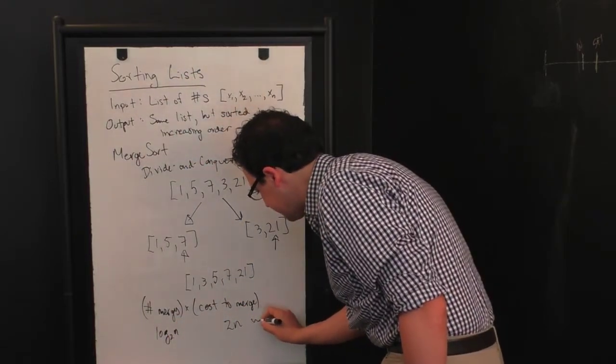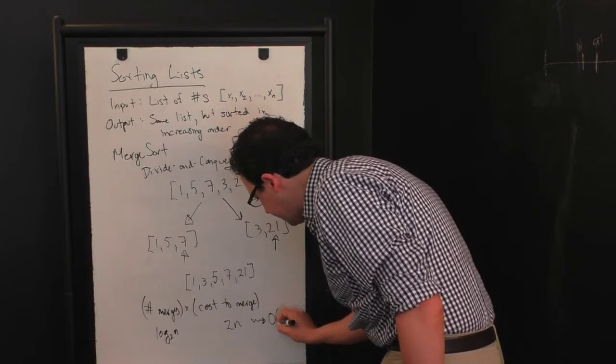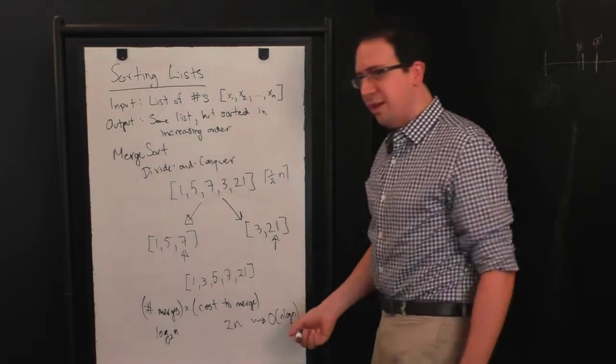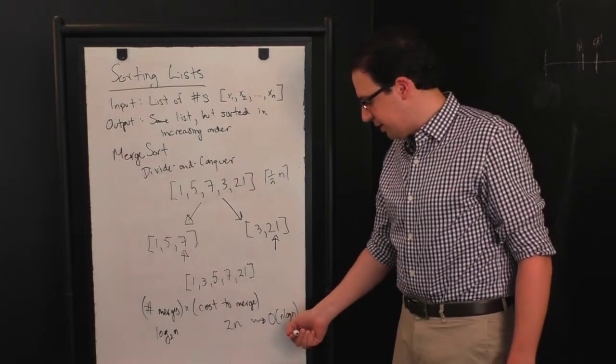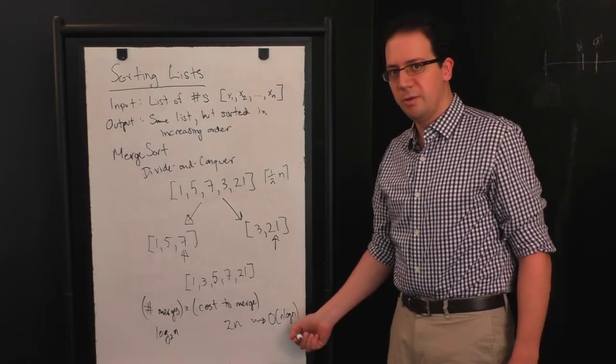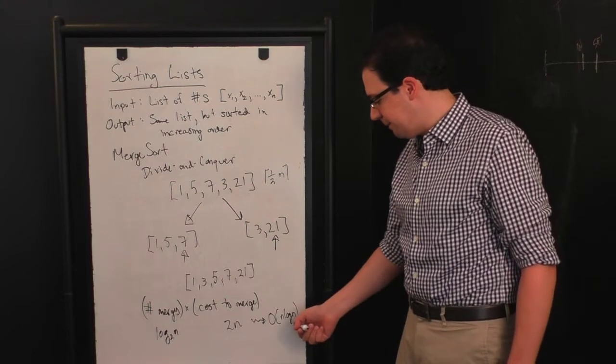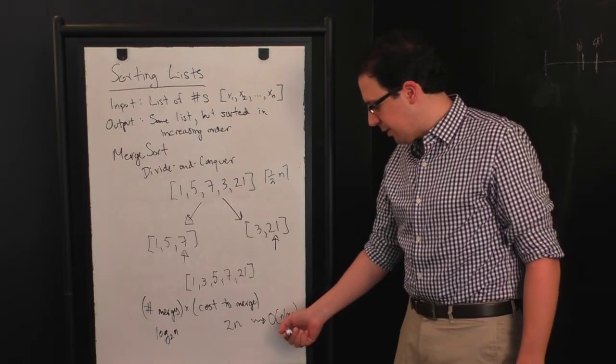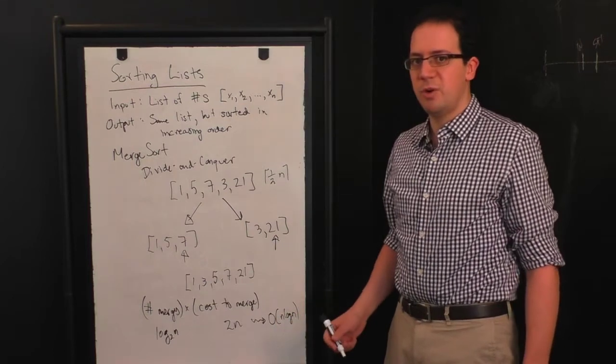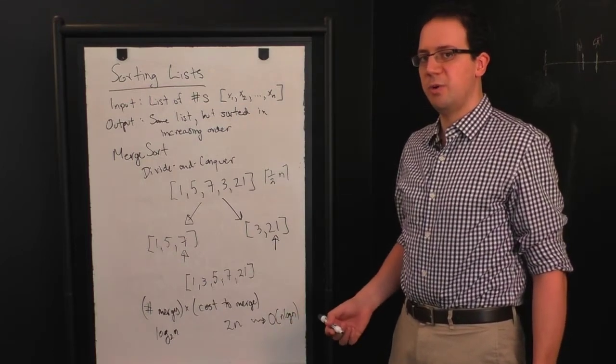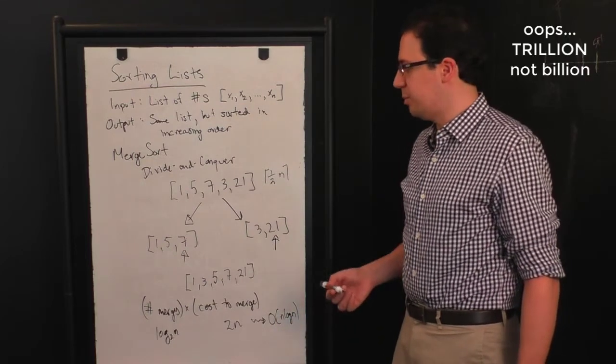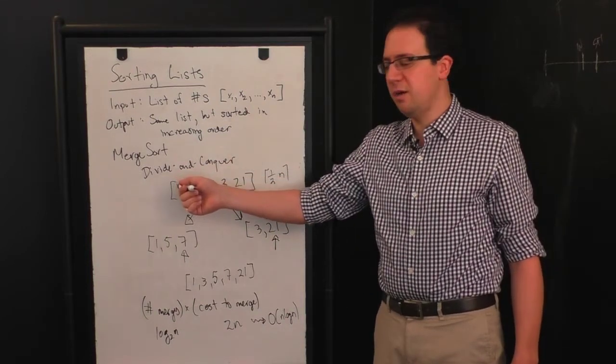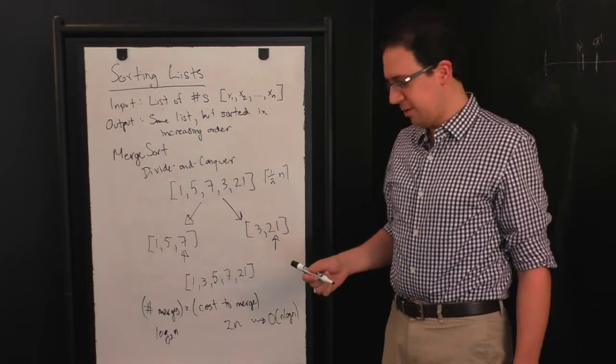So the total cost here ends up being order n log n. And this we like, this is much closer to linear than n squared, right? So on a list of length a million, log base 2 of a million is roughly 20. So n log n is roughly 20 million in this case, whereas for an n squared algorithm, it was a billion. So here we see by using this algorithmic paradigm of divide and conquer, we actually get a much better algorithm.